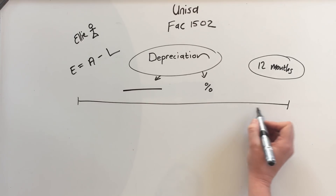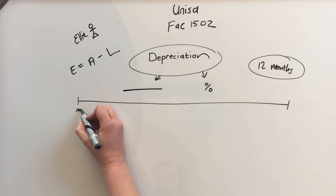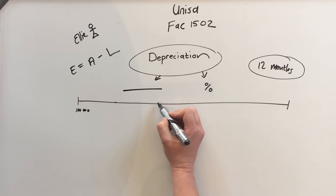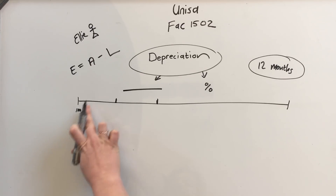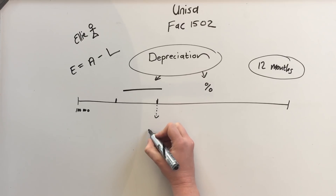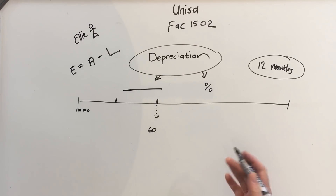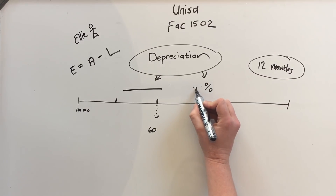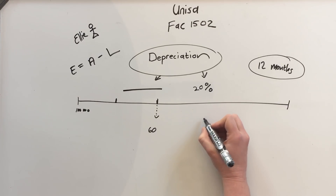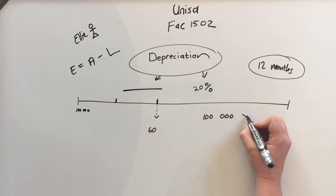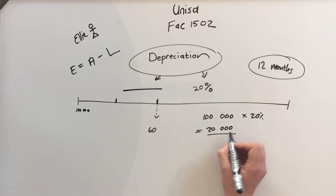It becomes much easier if you draw yourself a timeline and write down all the dates they give you. Let's say you bought a car for 100,000 Rand, two years have passed, and you are now selling the car for 60,000. You have to work out what the depreciation was. If they give you a percentage — let's say 20% — we start with 100,000 times 20%, which gives us 20,000 for the first year.